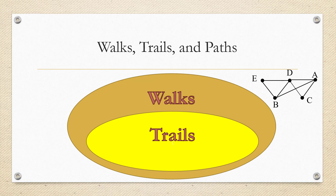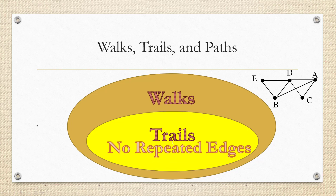If we add the extra condition that we have no repeated edges — so no backtracking — we call that a trail. For example, if I go from E to D, then D to C, C to A, over to D, and back to B again, I've not hit any of the edges twice, so this type of walk is called a trail.